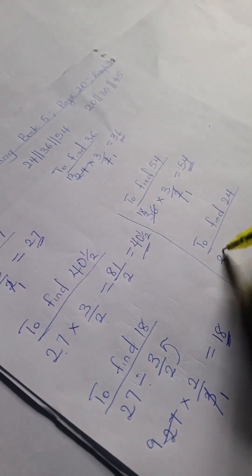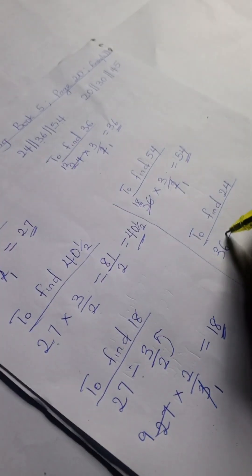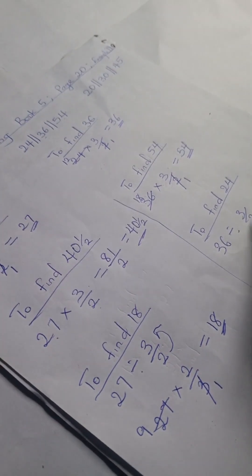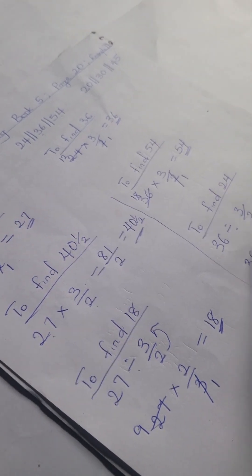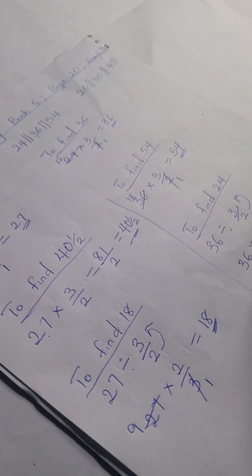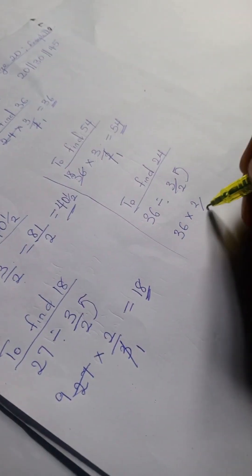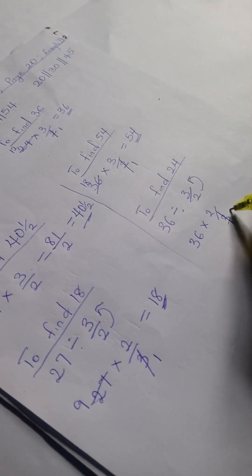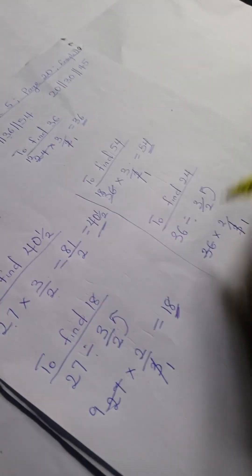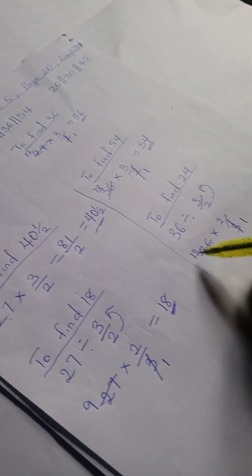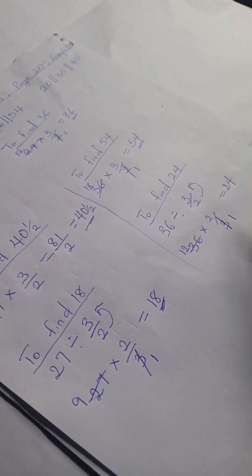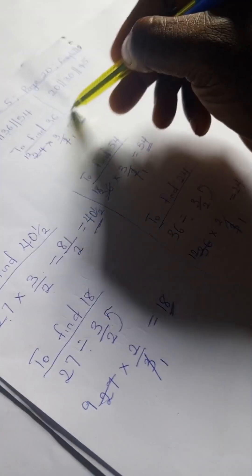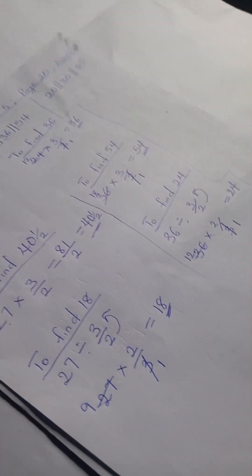To find 24, we have 36 divided by 3 over 2. So we solve 36 times the reverse of this, which is 2 over 3. 3 divides into 3 giving 1, and 3 divides into 36 giving 12. So 12 times 2 gives us 24.